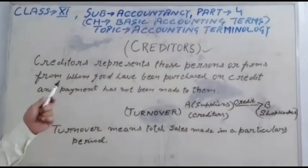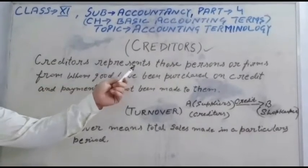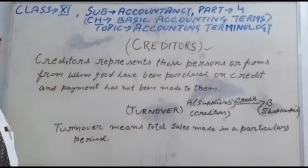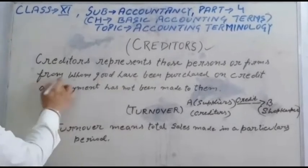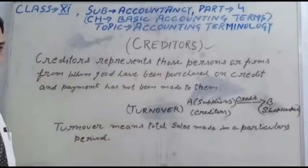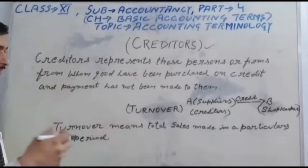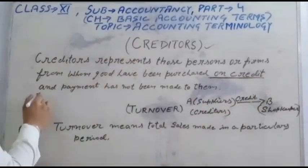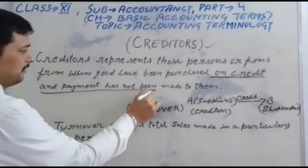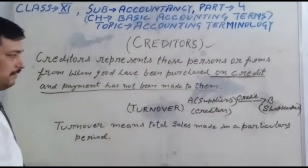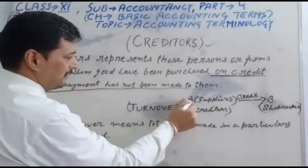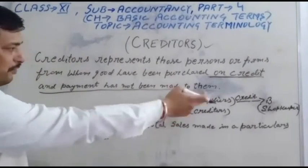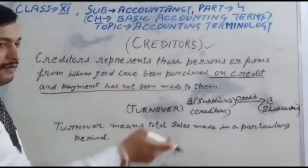Now let's see the particular meaning given. Creditors represent those persons or firms from whom goods have been purchased on credit — same concept as for debtors — and payment has not been made to them. For example, A is a creditor because B is buying from A on credit, and B's payment has not been made to them still.